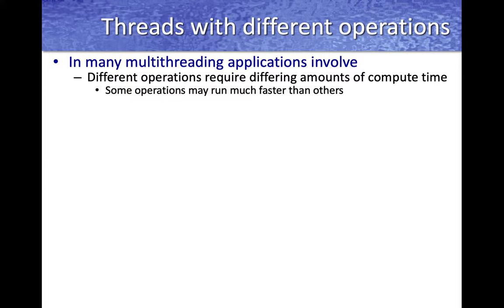However, in many applications in multithreading, different operations are required. Threads may not be doing the same kind of operations, and different types of operations will need to be performed. In such cases, some threads might run much faster than others, because some operations require more CPU compute time and some require less. This creates a significant imbalance between the operations of the threads.